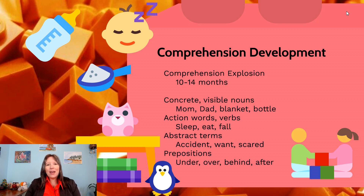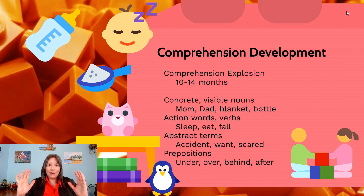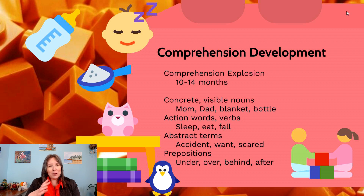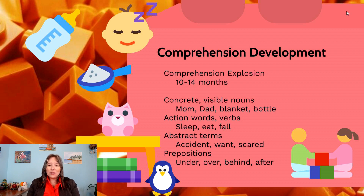Although we only produce our first word at roughly 12 months of age, we go through a comprehension explosion a couple of months before that. On average, the comprehension explosion happens somewhere between 10 and 14 months of age — we start to rapidly understand what is being said around us even though we may not be producing it yet. The first thing we learn to understand is our own name, which can happen as early as six months and as late as eight months.